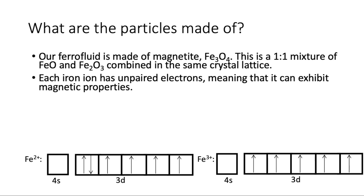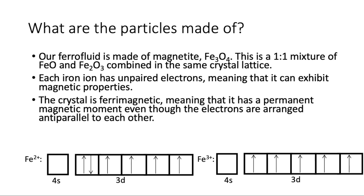Each iron ion is going to have unpaired electrons, which means that it can exhibit magnetic properties. We call that paramagnetism. The crystal that's formed is very magnetic, and that means it has a permanent magnetic moment, even though the electrons are arranged anti-parallel to each other.